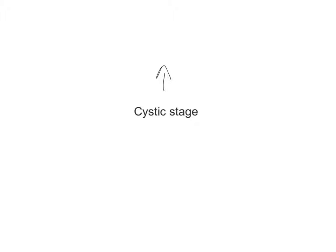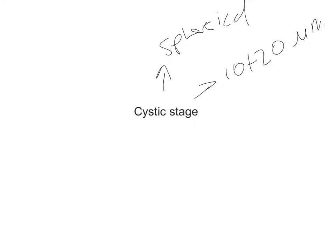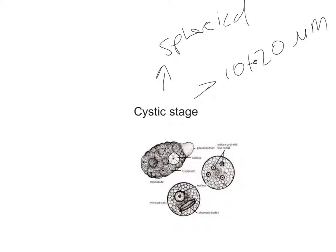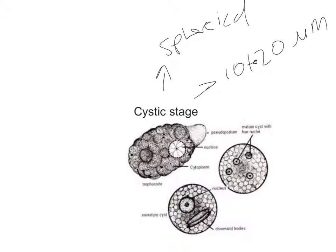The cyst is spherical. During the pre-cystic stage, the trophozoite becomes round at about 10 to 20 micrometers, so the cyst is also spherical in shape and generally around 10 to 20 micrometers in size. In this image, the form shown here is the early or immature cyst, and this other form is the mature cyst.